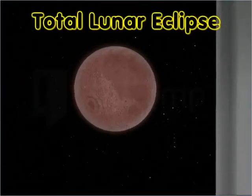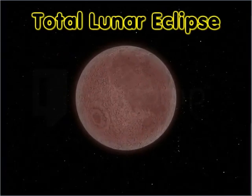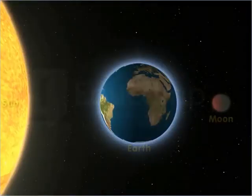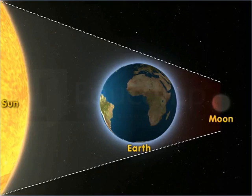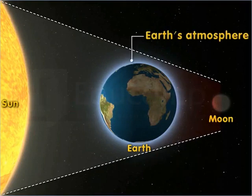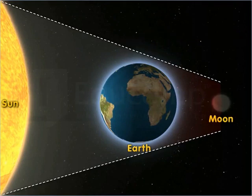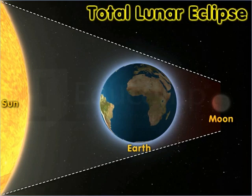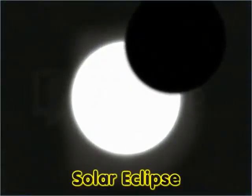During a total lunar eclipse, the Moon appears red. This is because the red component of sunlight can filter through the Earth's atmosphere to reach the Moon. The filtered sunlight makes the Moon appear red during a total lunar eclipse.